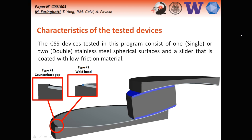These are the main characteristics for both typologies of devices. Type one is represented by a counter core gap where the sliding surface is installed. The sliding surface is made up of stainless steel, a very thin spherical plate, and for type one, this spherical surface is installed within a counter core gap. Whereas for type two, these sliding surfaces are installed through a weld bead. These two typologies may have different consequences on the damage of the sliding pad material when displacement demands higher than the design value are applied.